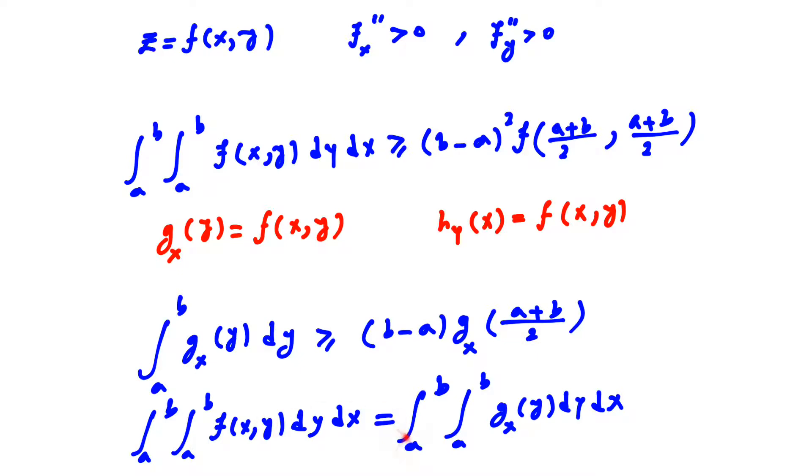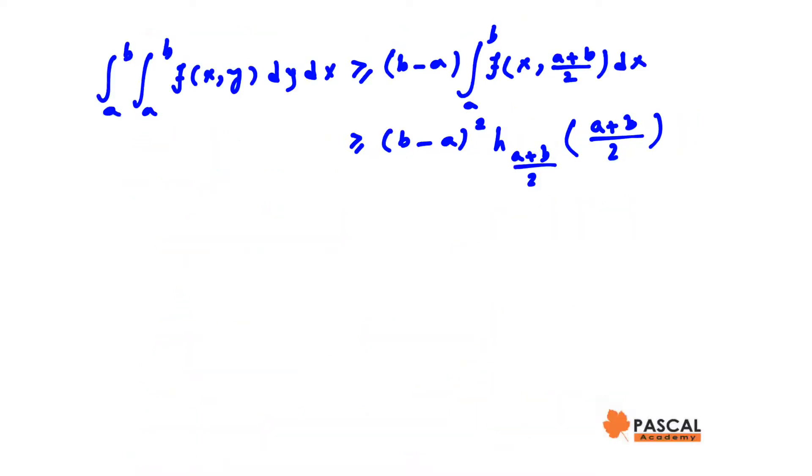The given integral can be written as the integral from a to b of the integral from a to b of g(y) dy dx, which is greater than or equal to (b-a) times the integral from a to b of f(x, (a+b)/2) dx.